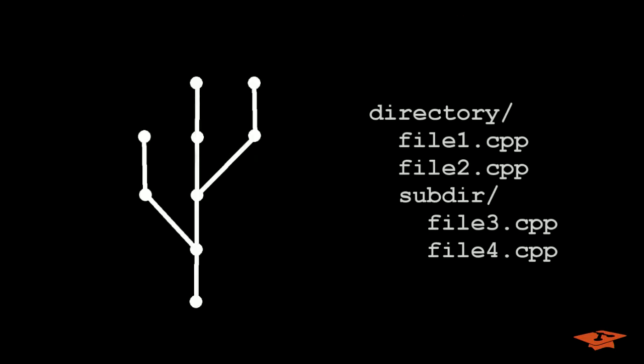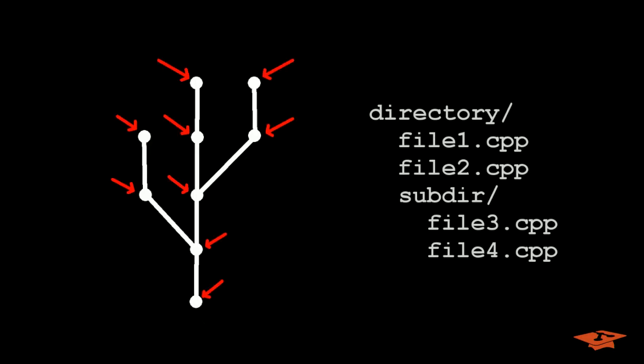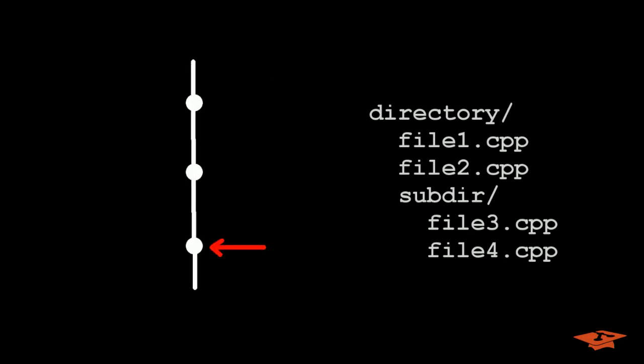This is a commit tree. It's what Git both creates and uses for various functionality. This tree is usually shown with time increasing bottom to top, meaning newer commits are here and older commits are here. Every circle is a commit. Every line is a parental relationship. Commits simultaneously represent both an instant of source code in time and a set of changes to files in that instant.